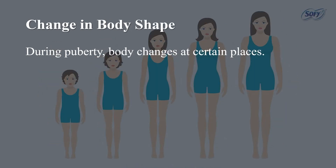The second change during puberty is change in body shape. During puberty, the body changes at certain places, and these changes are different for boys and girls. In girls, the pelvic bones grow and the region below the waist becomes broader. In boys, the shoulders broaden and the body muscles grow more prominently than in girls.